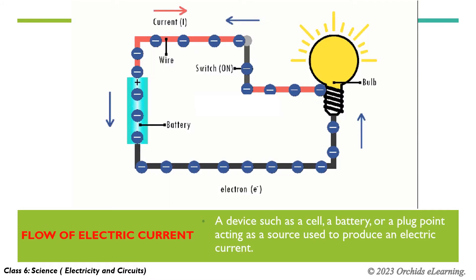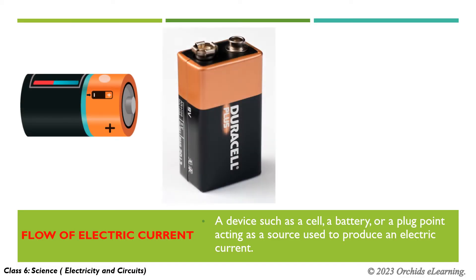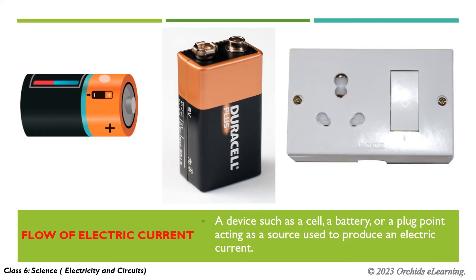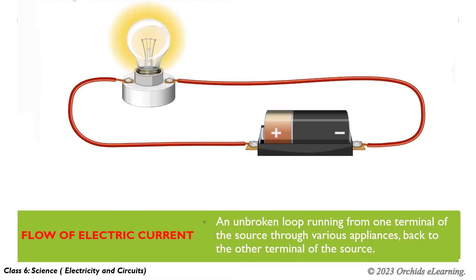Three basic conditions are required for an electric current to flow. A device such as a cell, a battery, or a plug point acts as a source used to produce an electric current. A wire made of a metal such as copper, silver, or aluminum will allow electric current to flow through easily. An unbroken loop running from one terminal of the source through various appliances, back to the other terminal of the source, is also required.